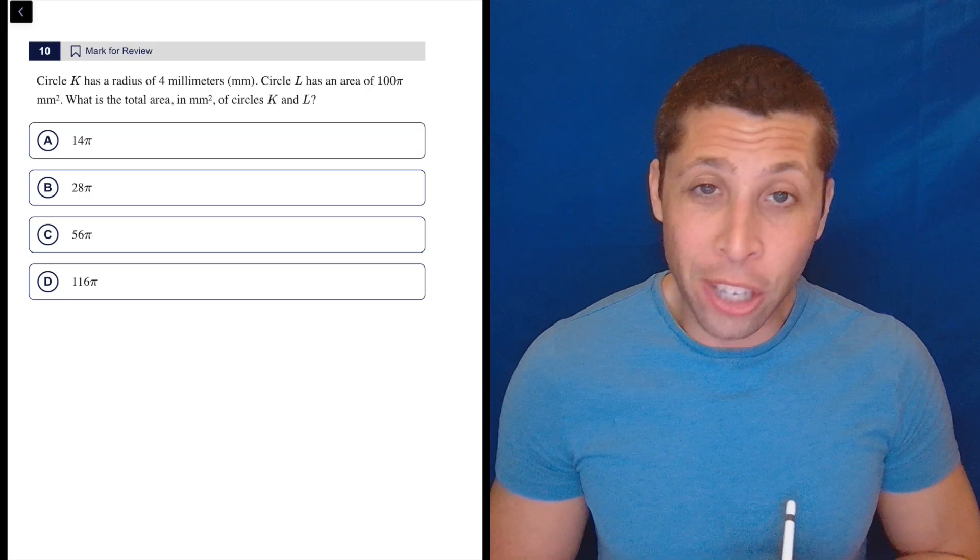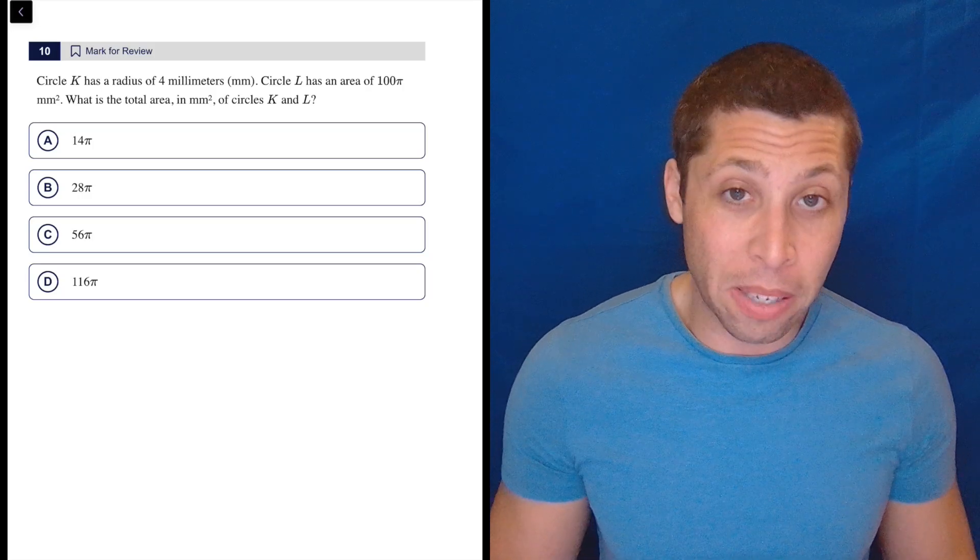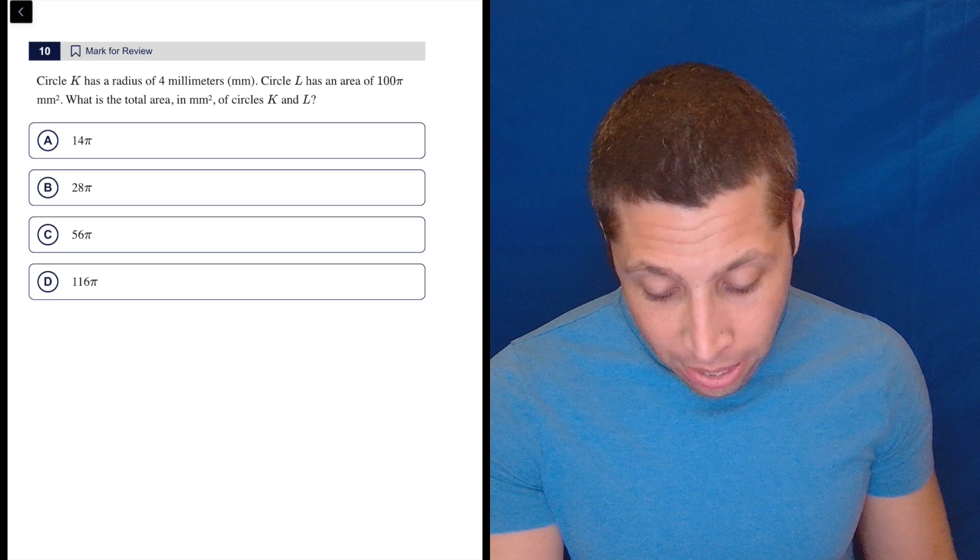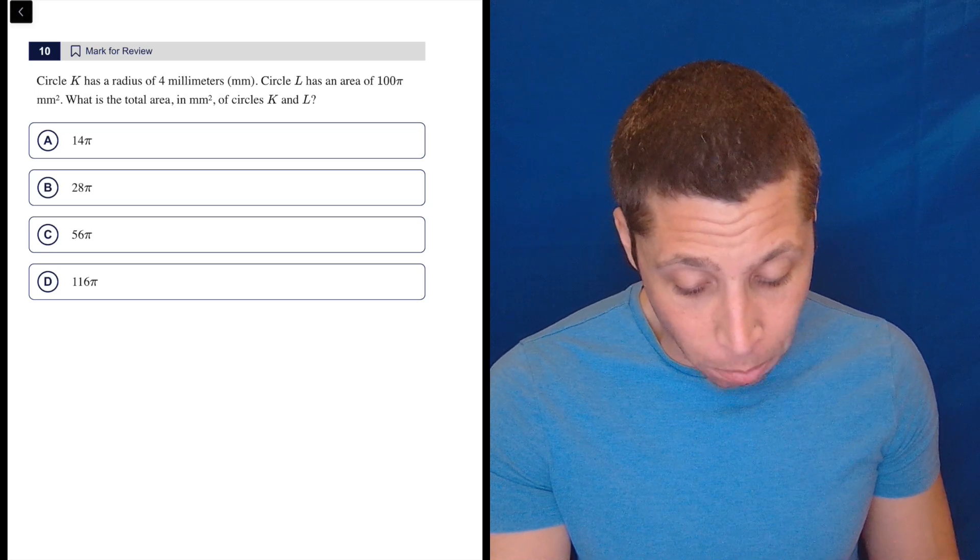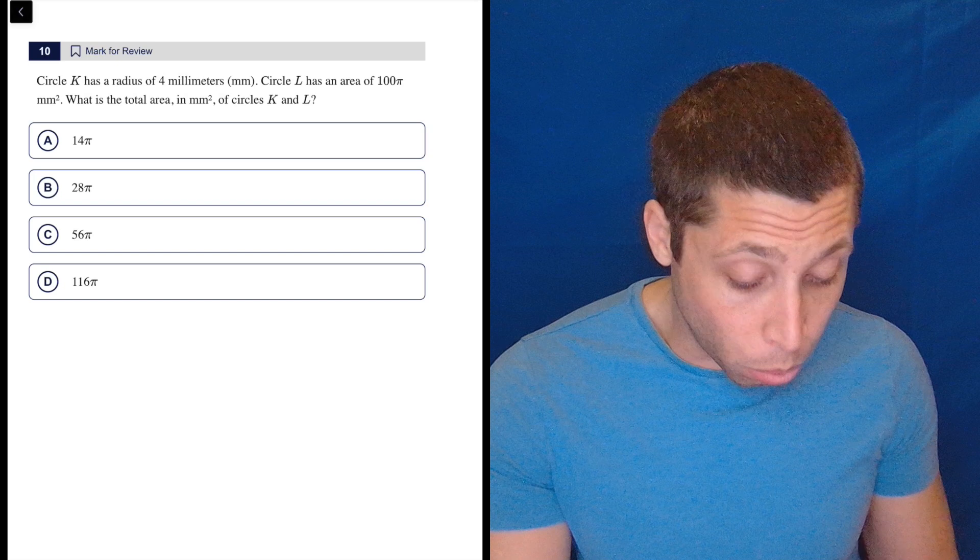This is slightly twisted as a geometry question, right? Because there's two circles, but it's pretty simple. Circle K has a radius of four millimeters. Circle L has an area of 100π millimeters squared. What is the total area of these two things?